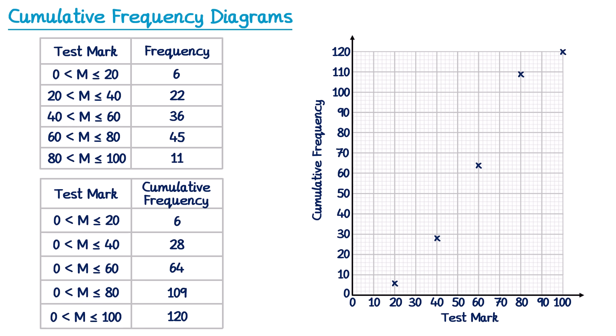There's one extra cross we ought to put on as well. Looking at the regular frequency table, the lowest point of the first interval tells us where to start. Since nobody is scoring below 0 in this test, the cumulative frequency up to the point of 0 is 0, so we can put a cross at (0, 0). Just be aware that the first group won't always start at 0 — whatever value is there, you can plot a cumulative frequency of 0.